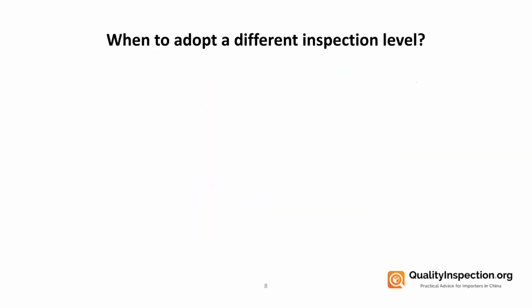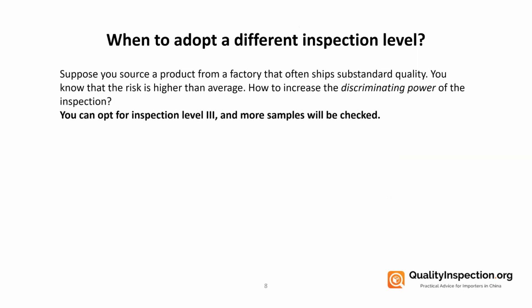You'll have noticed in the AQL tables that there are different inspection levels. When would we use those? Well, if you're sourcing from a factory that's giving you some problems — shipping substandard quality, you're losing a bit of patience and trust, you know that your risk is more — you need to increase the discriminating power of the inspection. In this case, opt for inspection level 3, and that'll mean that you're going to check more samples.